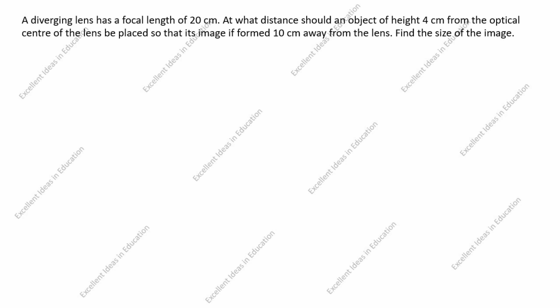Hi students, welcome to my channel Excellent Ideas in Education. Today we are going to solve this slide chapter problem. This is a board exam problem: a diverging lens has a focal length of 20 centimeters. At what distance should an object of height 4 centimeters from the optical center of the lens be placed so that its image is formed 10 centimeters away from the lens? Find the size of the image.